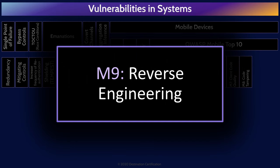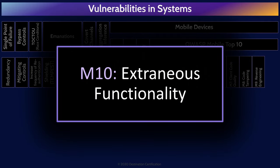Reverse engineering refers to an attacker carefully analyzing a mobile app's code to reveal information about backend servers it's connected to, reveal problems with crypto, or steal intellectual property. To prevent this, use code obfuscation tools. And the final OWASP top 10 mobile vulnerability is extraneous functionality, which refers to an attacker analyzing an application to find hidden functionality left behind by a developer, often allowing unauthorized access to backend servers. To prevent this, make sure extraneous functionality is removed before an app is published by doing things like manual code review.